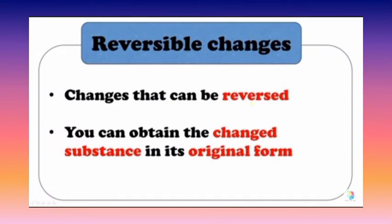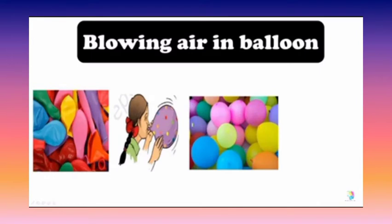Reversible changes are the changes that can be reversed. You can obtain the changed substance in its original form. When we blow air into a balloon, its shape and size will change. When we release or remove this air from the balloon, it will retain its original shape. So it is a reversible change.